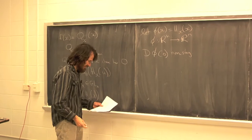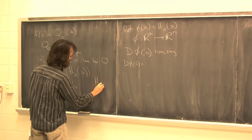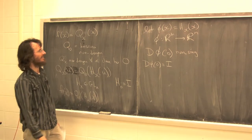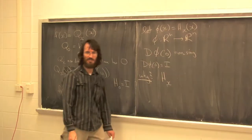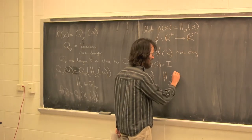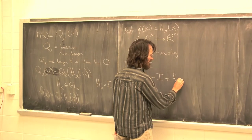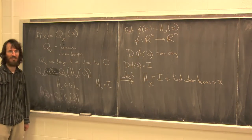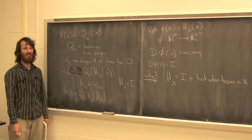In fact, the derivative at the origin is equal to the identity, because h sub 0 equals the identity. Think of h sub x as a matrix whose entries are functions of x. It's the identity plus first order terms and higher. When you multiply h sub x times x, you get the identity times x plus quadratic terms and higher. Therefore the derivative at the origin is the identity, hence non-singular, so it's a local diffeomorphism in a neighborhood.